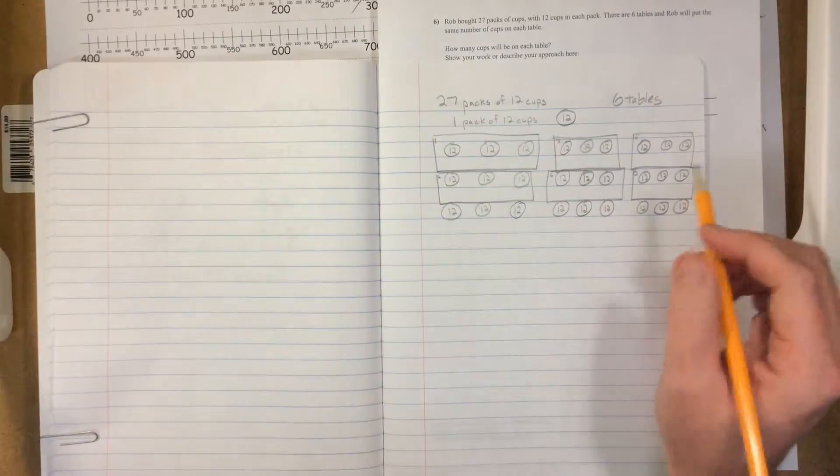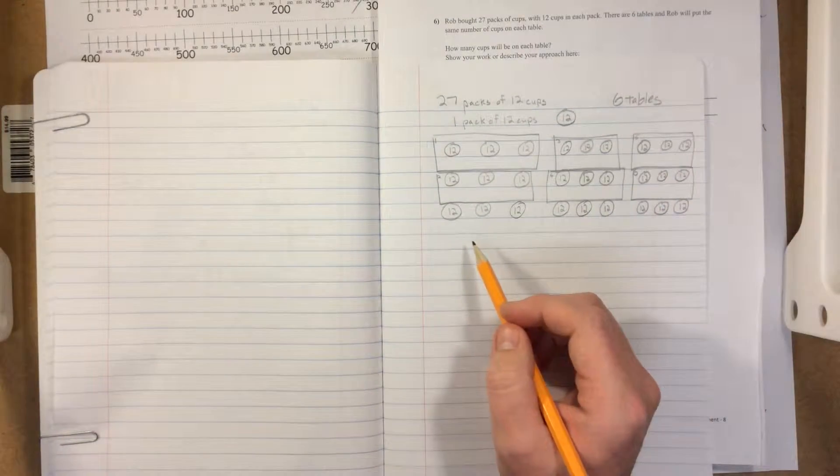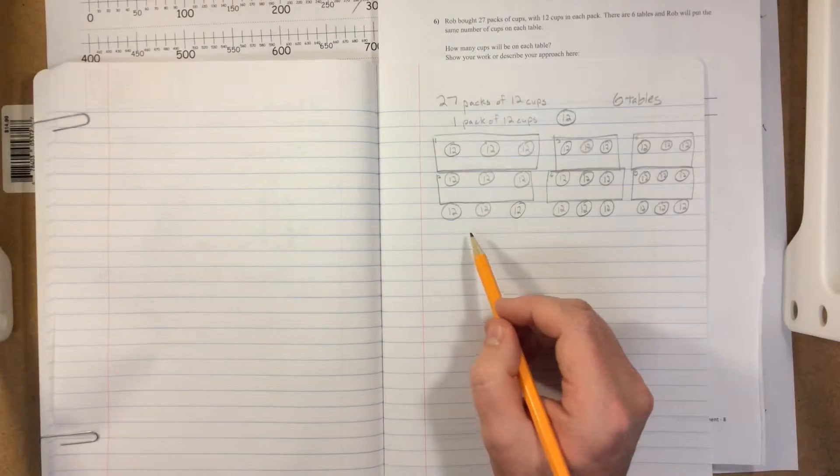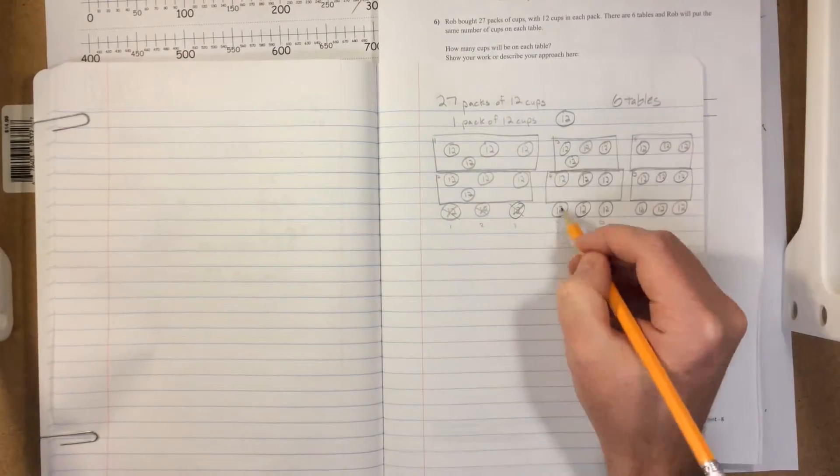On each table there are three packs of cups. We also have extra packs of cups that we need to put onto these tables. So one, two, three, four, five, six. Let's take these packs of 12 and put one on each table.